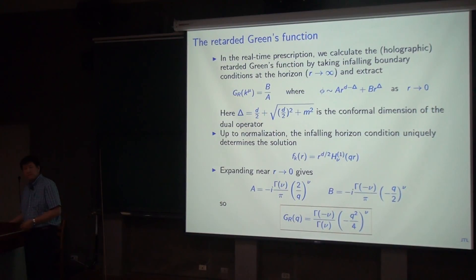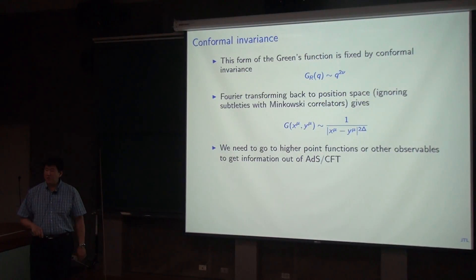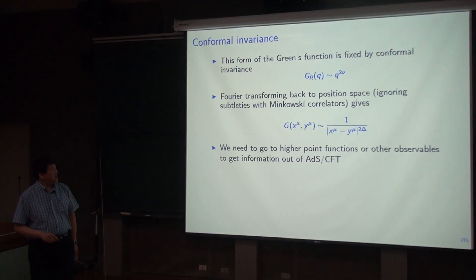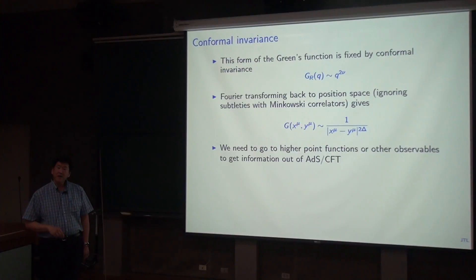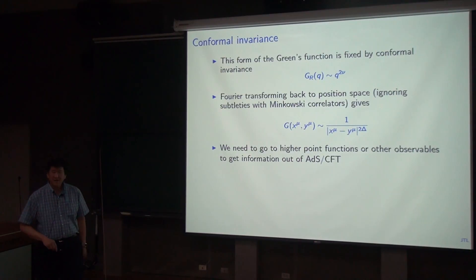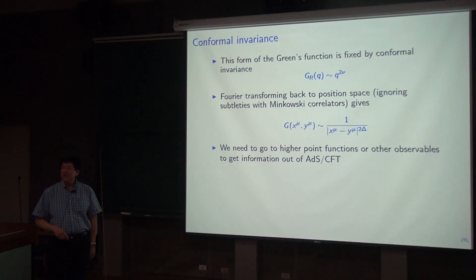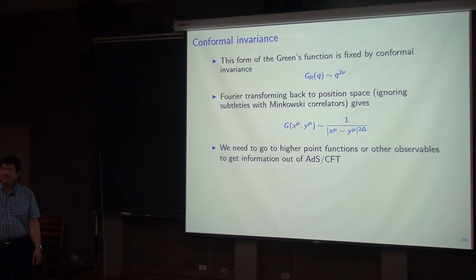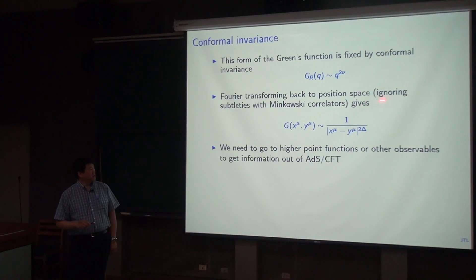If you go back to position space, this gives the familiar CFT correlators — the correlation function between operators at position X and Y depends only on the separation X minus Y, and falls off as a power law with the appropriate conformal dimension. Although you've built up the machinery of ADS/CFT to calculate boundary correlation functions, you would have known the answer just from conformal dimensions — this is purely kinematical. You're going to need higher-point functions, Wilson loops, or additional non-local observables to get real dynamical information out of ADS/CFT.